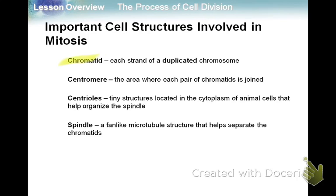Here are some important terms. A chromatid is each strand of a duplicated chromosome — they are identical to one another. The centromere is the area where the chromatids are joined. Centrioles are part of animal cells and help organize the spindle. The spindle is a microtubule structure that helps separate the chromatids.